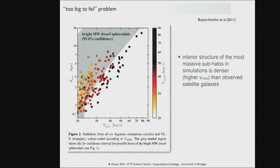There was a related problem called the too-big-to-fail problem. Michael Boylan-Kirchen published a paper in 2011 showing that at a given size, simulated systems were too dense — they had too high a circular velocity at a given size compared to observations. There was concern that Lambda CDM on very small scales might be wrong. But as we'll see at the end of the lecture, baryon physics helps explain these problems. We were pushing the subhalo assignment matching technique and relying on single-fluid simulations when in fact multi-fluid physics was needed to get the right answer.